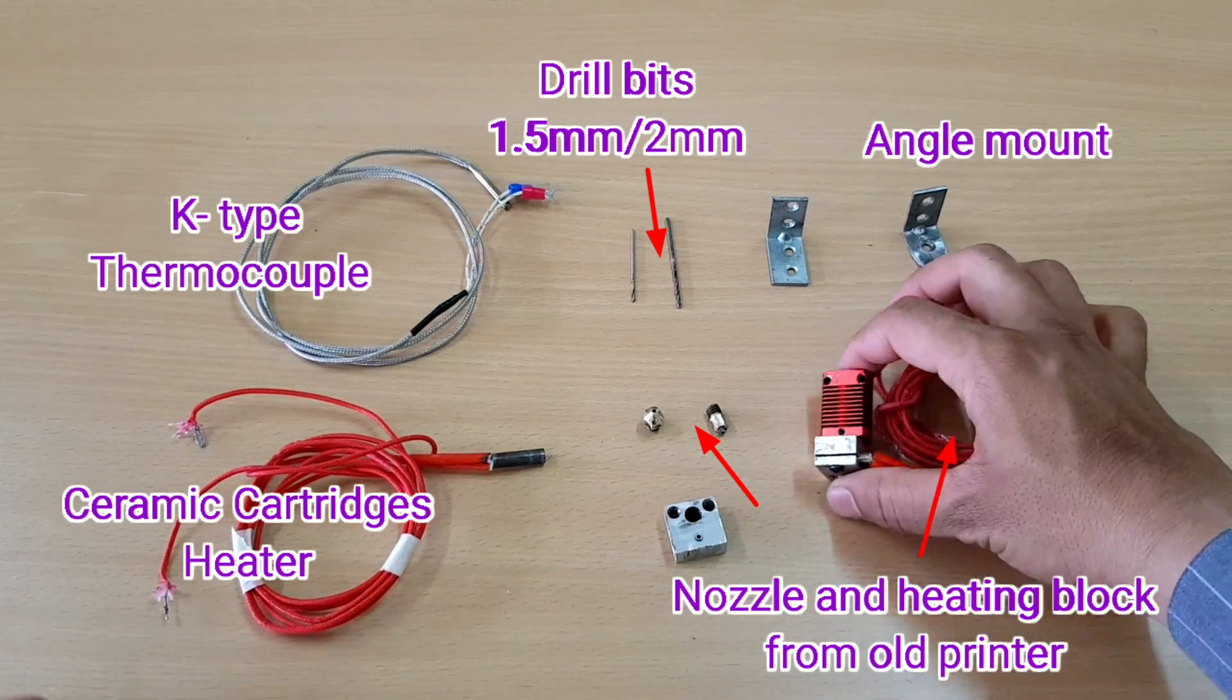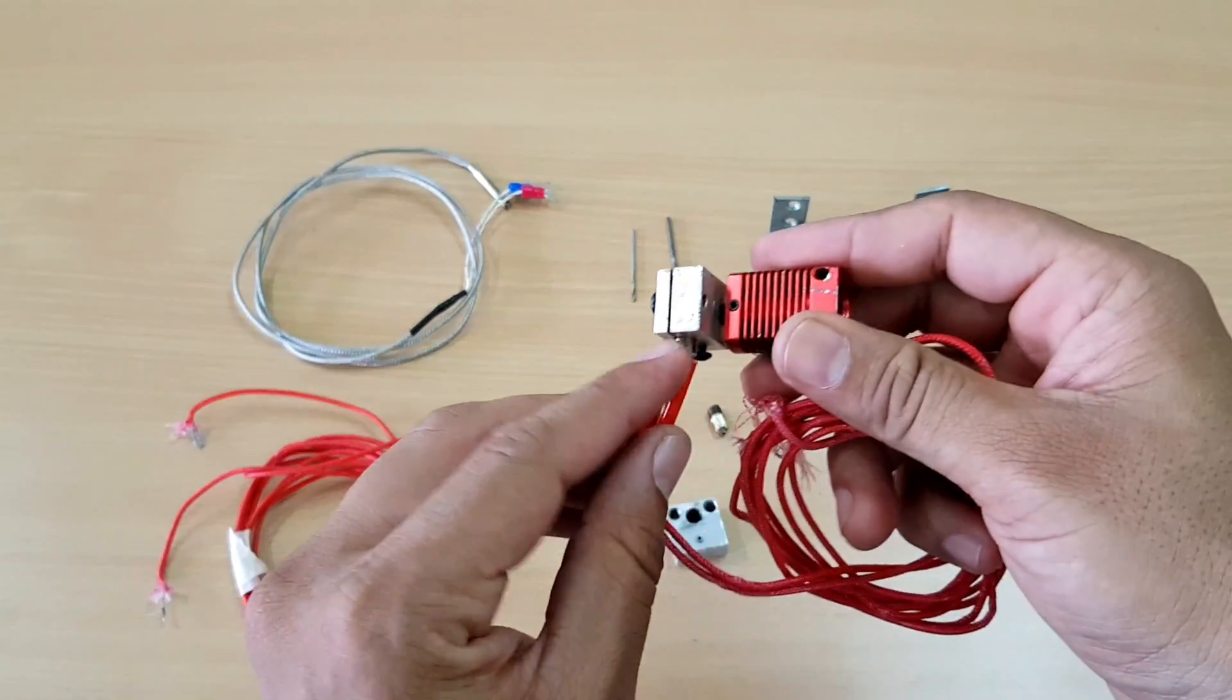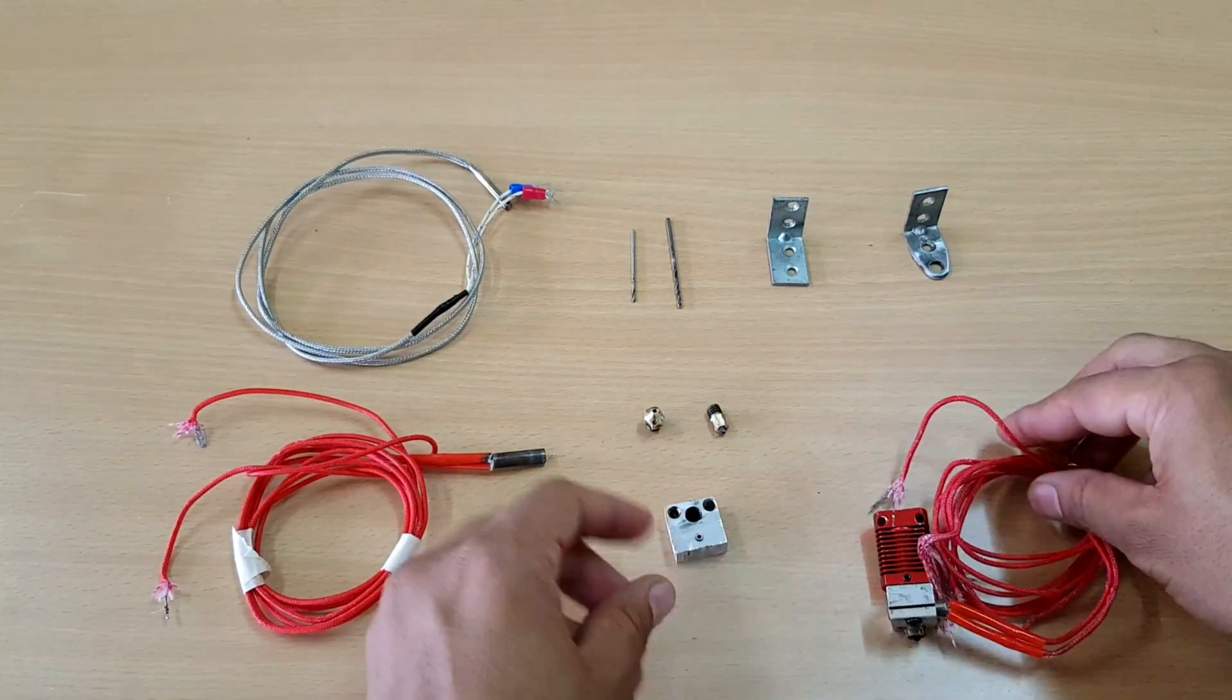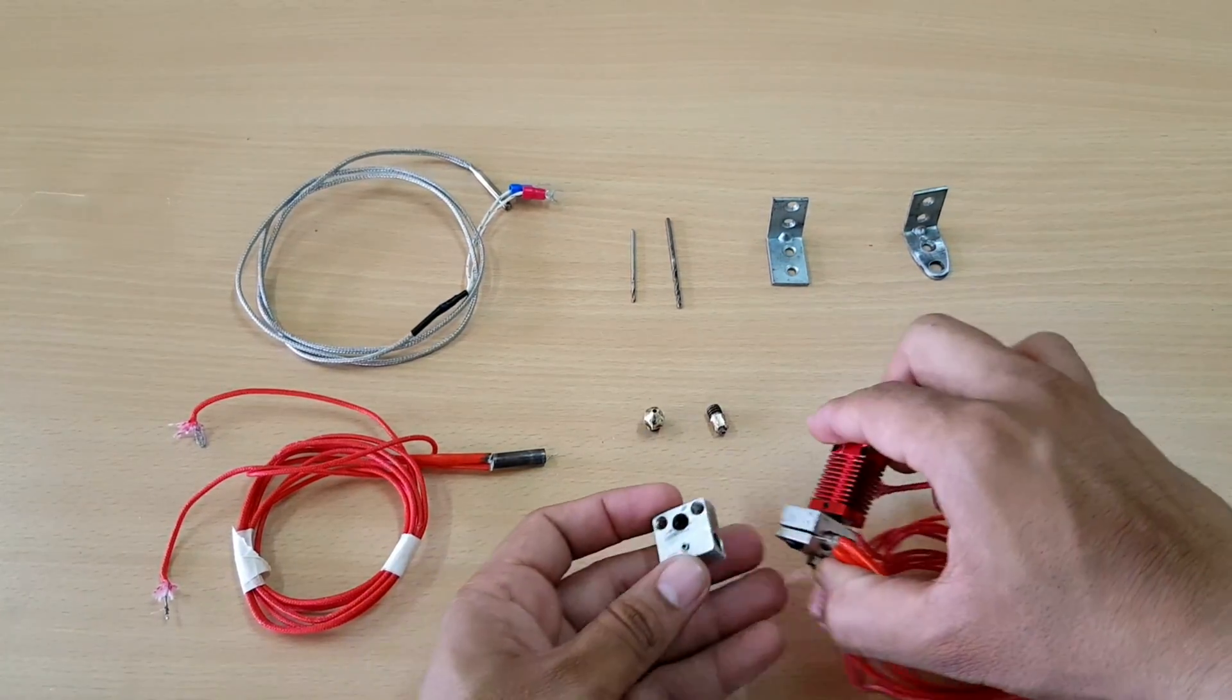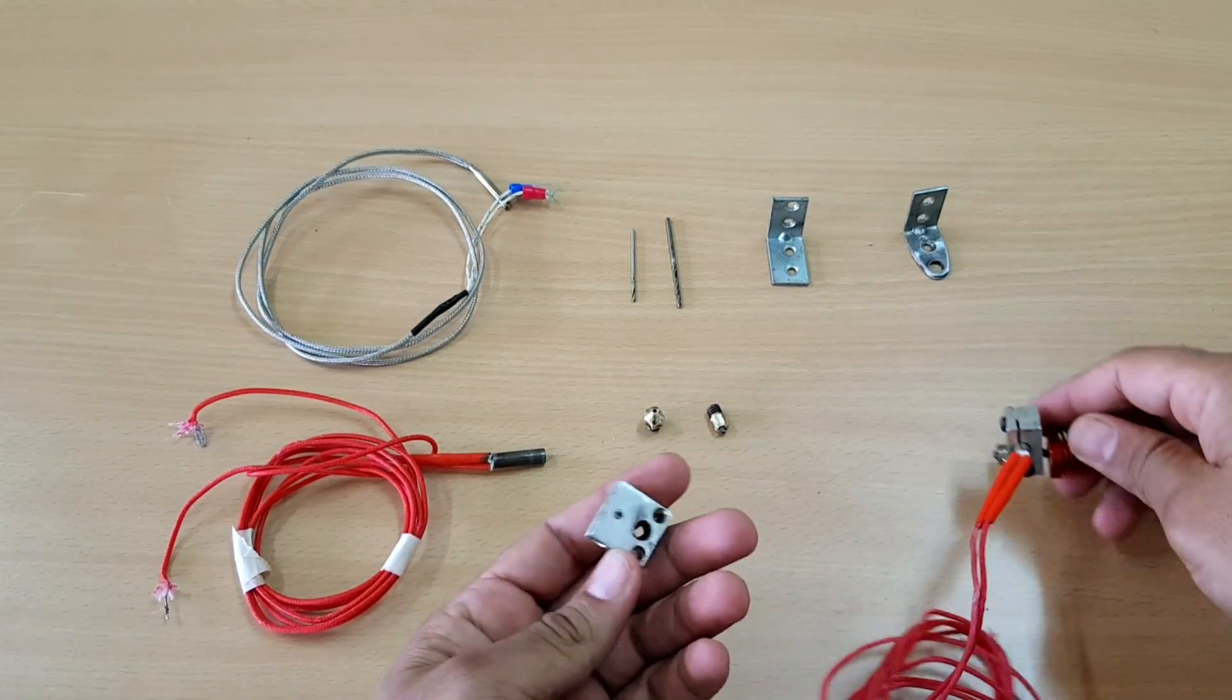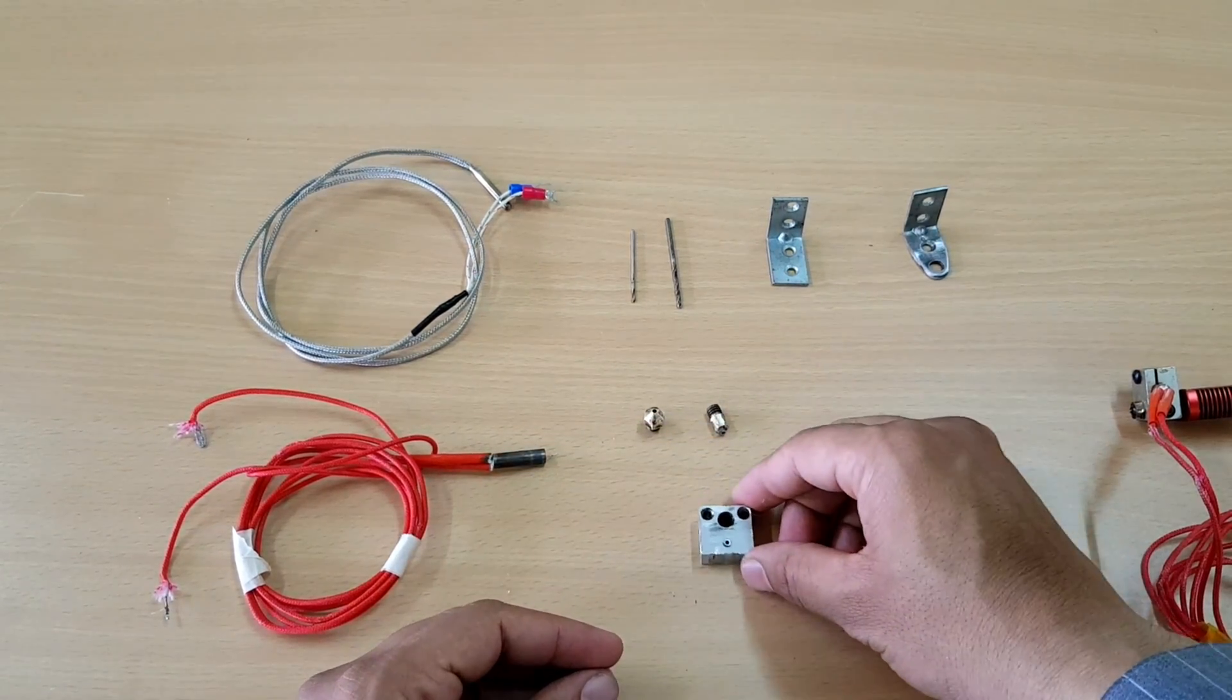This can be made from any spare or unused extruder nozzle assembly set. I have removed heating block and made additional hole for holding K-type thermocouple.